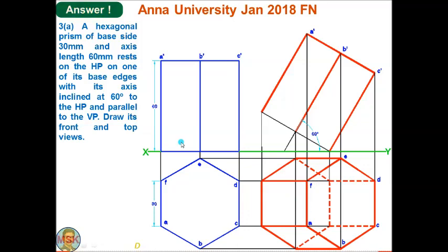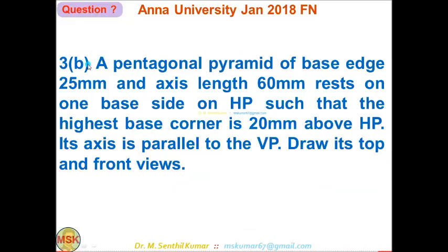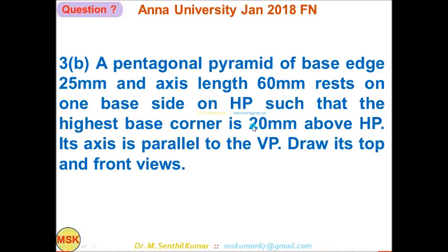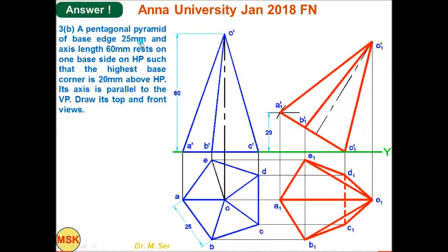Question 3B: a pentagonal pyramid of base edge 25 mm and axis length 60 mm rests on one base side on the HP such that the highest base corner is 20 mm above HP. The axis is parallel to VP. Instead of giving a tilting angle, they have given that after tilting, the opposite corner is 20 mm above HP. Draw the top view with the pentagon such that base edge CD is perpendicular to XY. It is a pyramid, so show the apex in the front view using two median lines to get apex O.